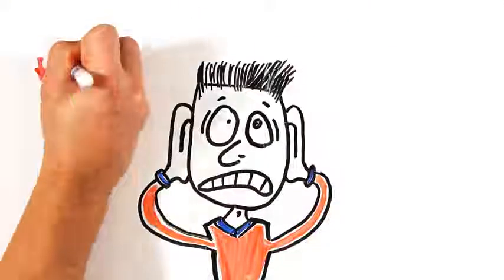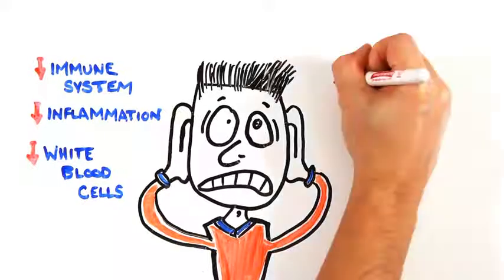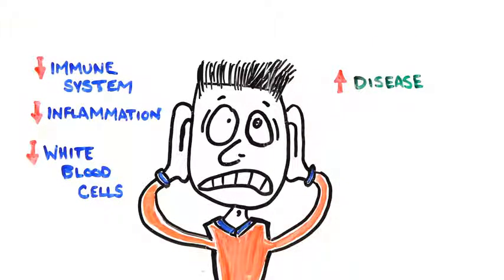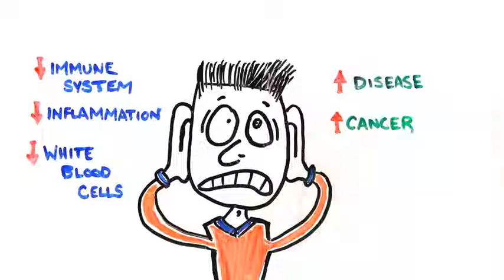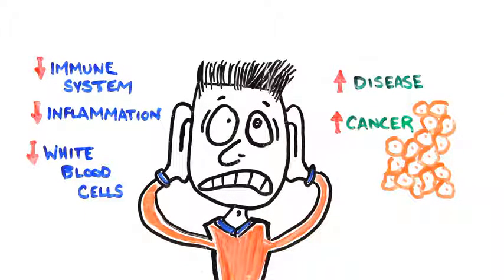The immune system shuts down, inflammation is inhibited, white blood cells are reduced, and susceptibility to disease increases. Some evidence also suggests that prolonged stress may be involved in the development of cancer.